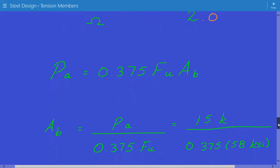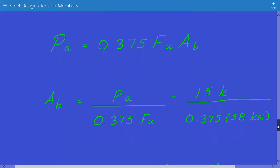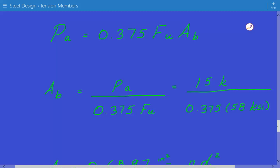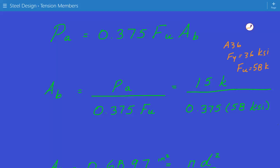We rearrange this equation and plug in the numbers. The required cross-sectional area is equal to the factored load divided by 0.375 times the ultimate tensile strength. So 15 kips divided by 0.375 times 58 ksi. For A36 steel, the yield Fy is 36 ksi and Fu is equal to 58 ksi, the ultimate strength.